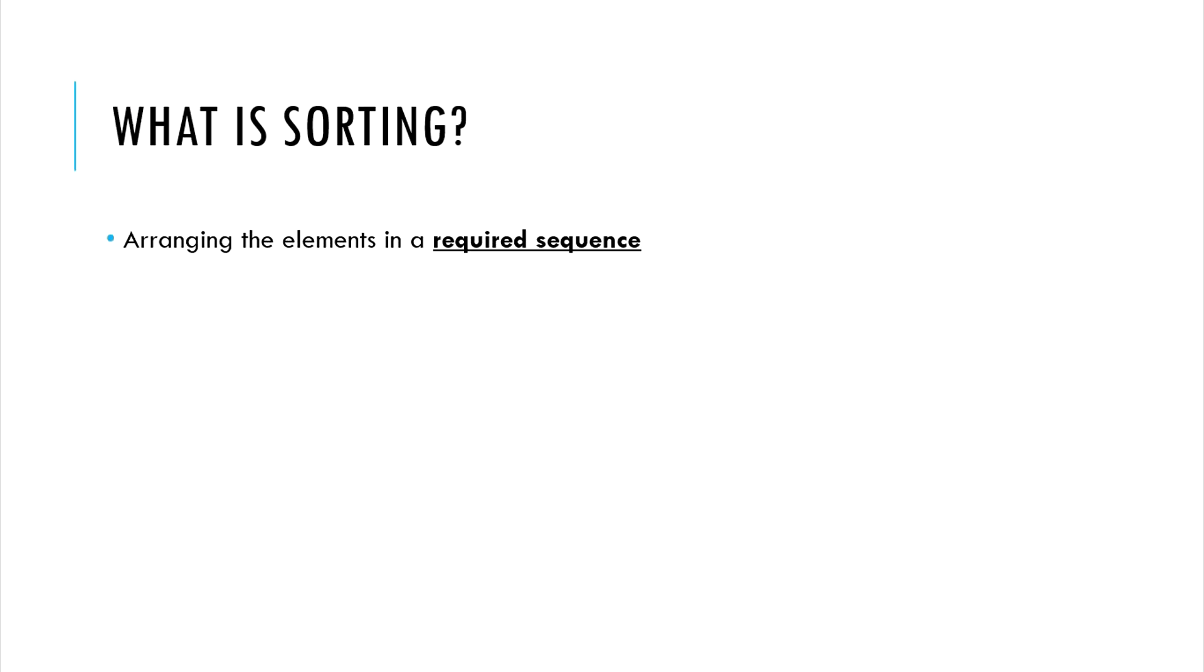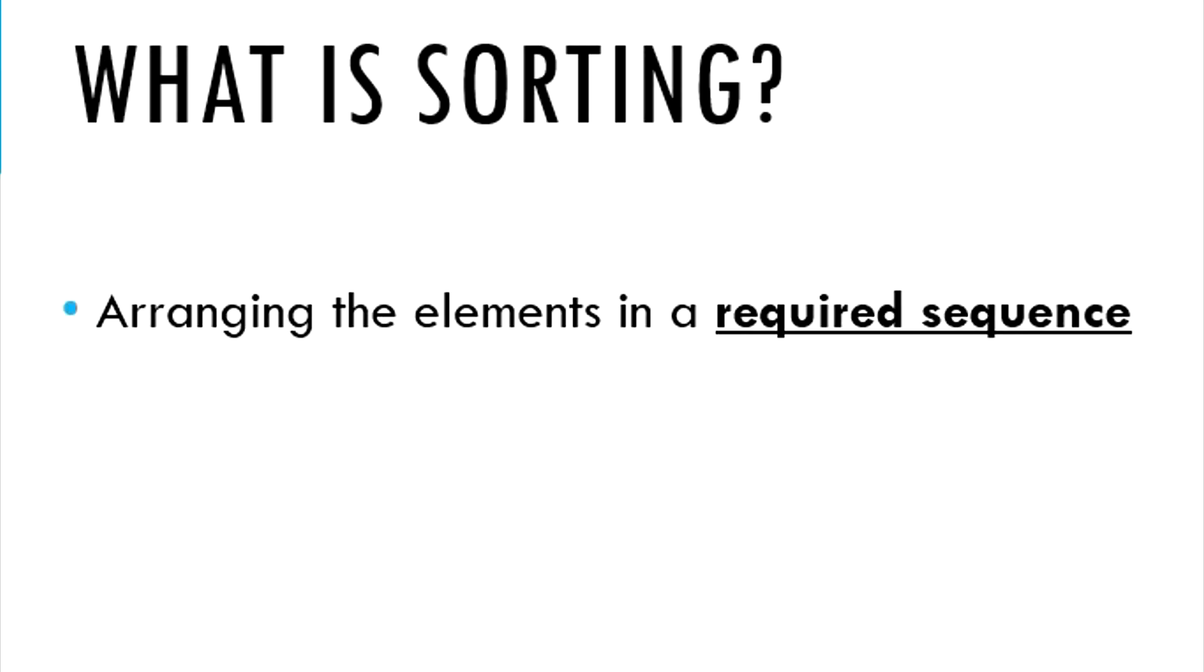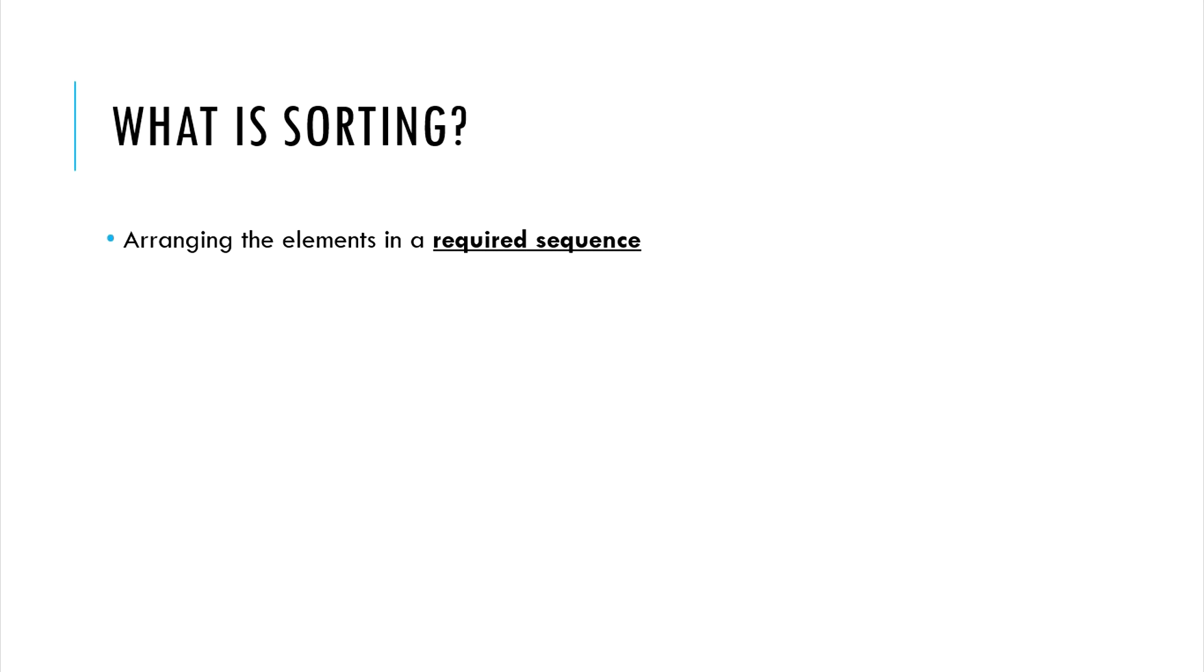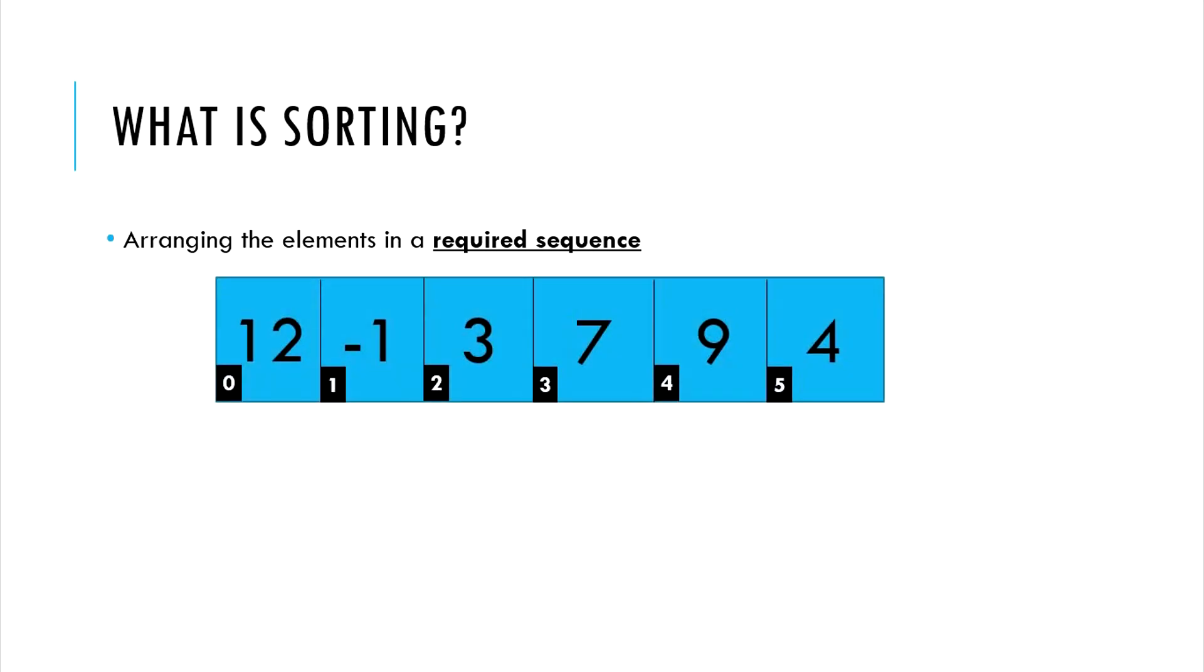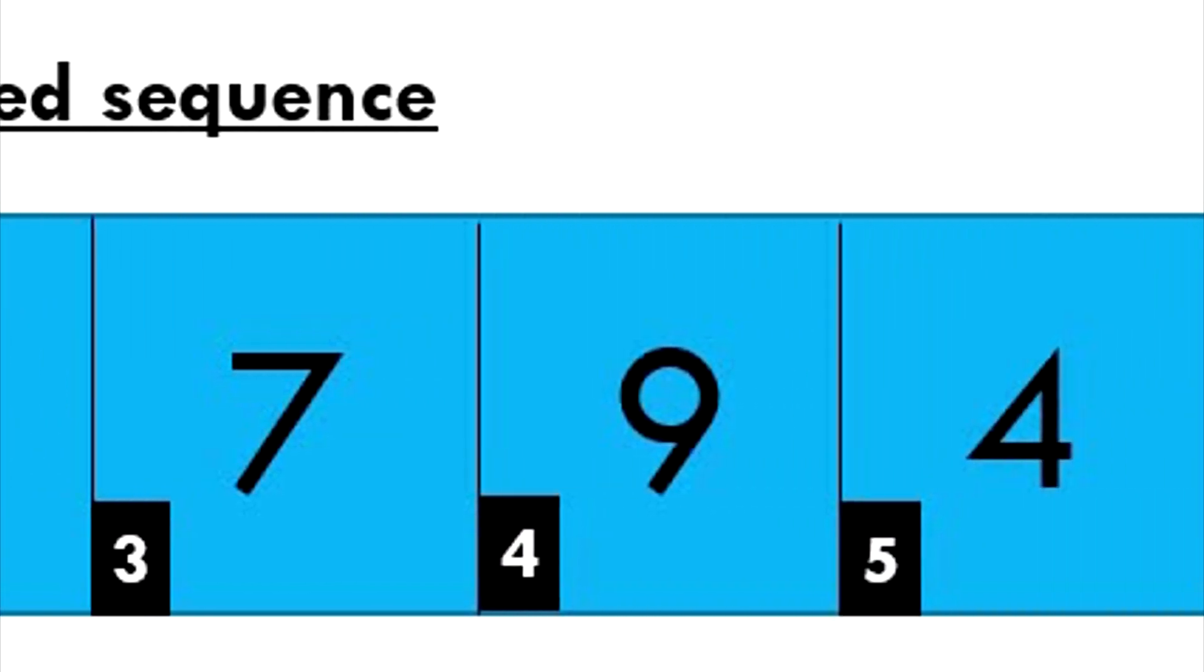So, what is sorting? Very simply, sorting is just arranging elements or objects in any required sequence. For example, let's say we had an array with these numbers: 12, minus 1, 3, 7, 9 and 4.